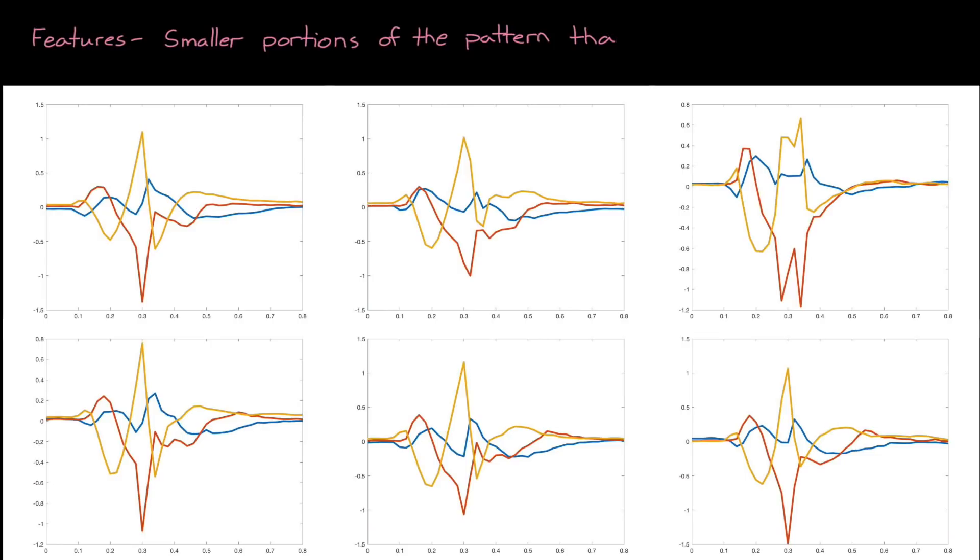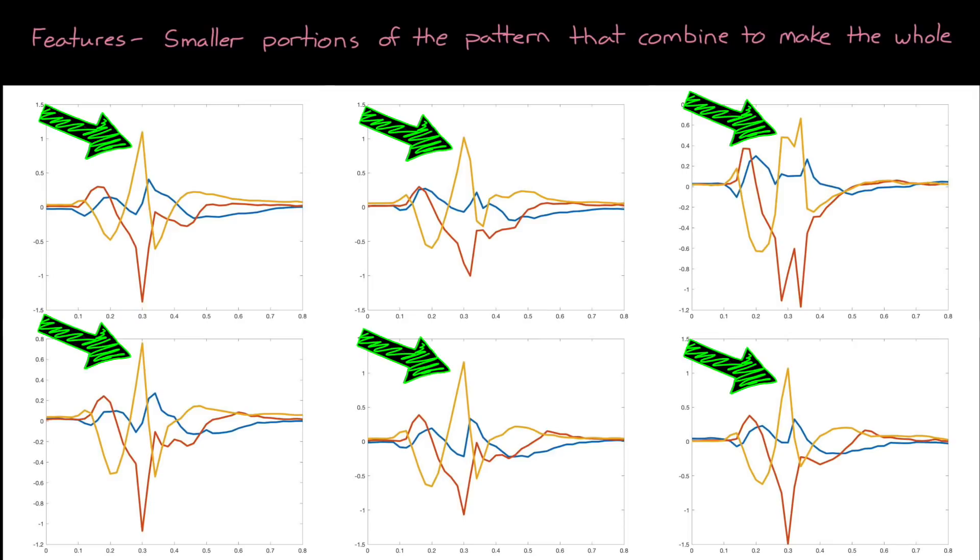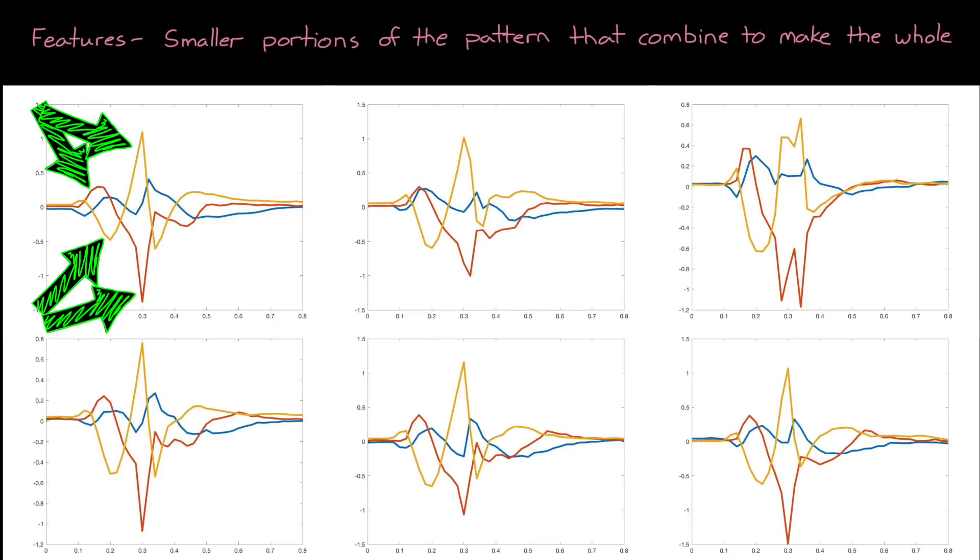By features, I mean smaller portions of the pattern that combine to make up the entire profile. For example, we may reason that a high-five profile consists of a slow acceleration at the beginning, corresponding to a person raising their hand, then another slow acceleration as they move their hand backward, followed by a quick acceleration as their hand moves forward and makes contact with another person.